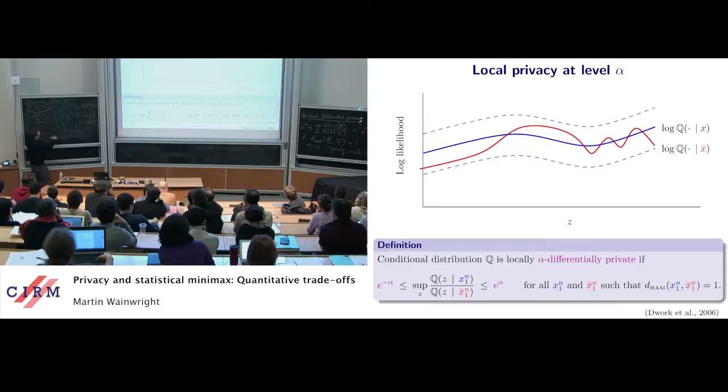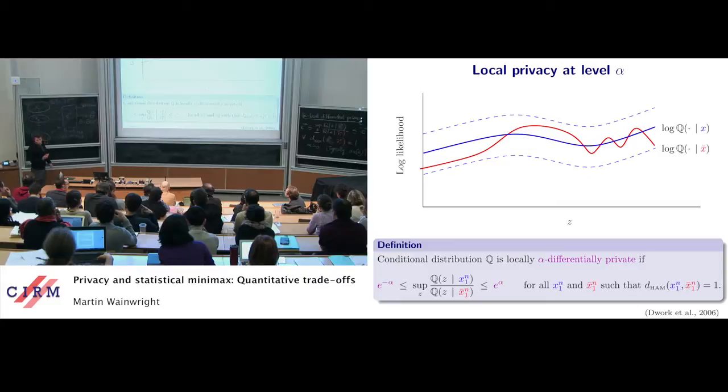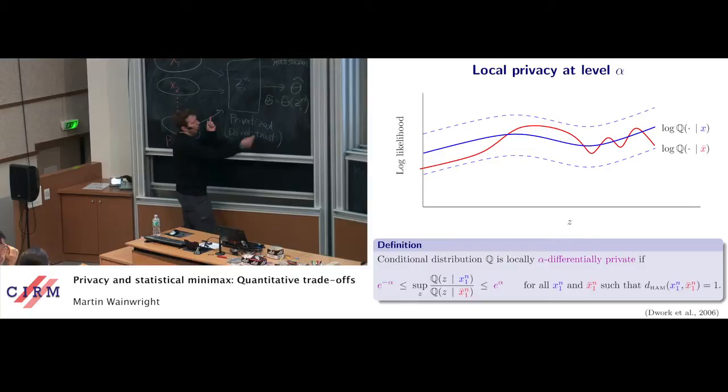For a fixed alpha, we're going to study the whole family of conditional distributions that satisfy that notion of alpha privacy. We're quite interested in the optimal ones — mechanisms that satisfy the constraint but preserve as much information as possible.